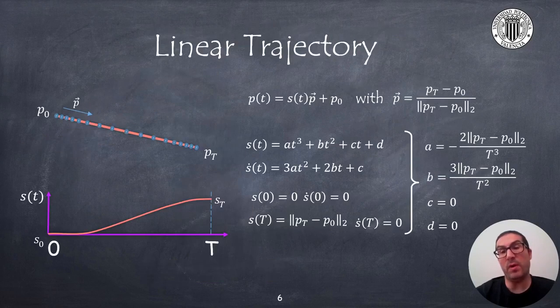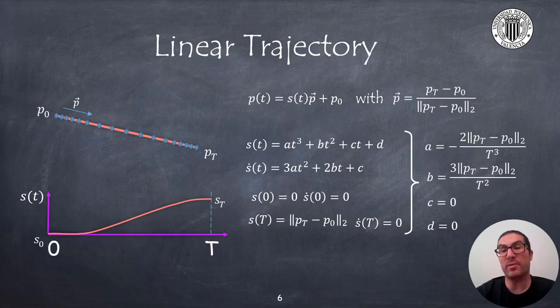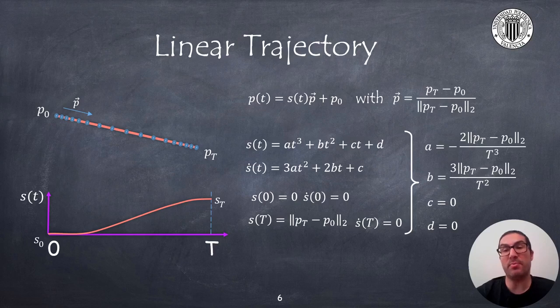If you want to describe a linear trajectory, then what we need is to express such trajectory as a line between two points p0 and pt. The distance to point 0 will be expressed as a variable s over time.